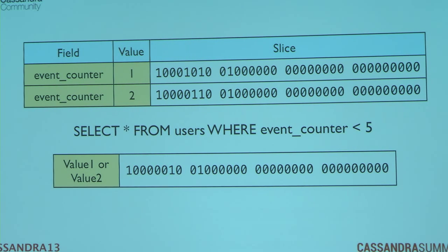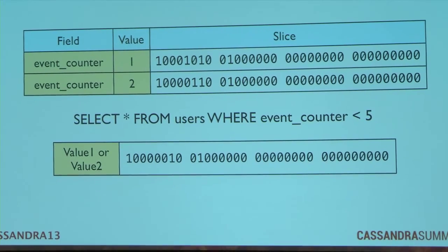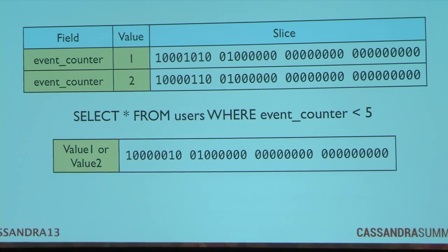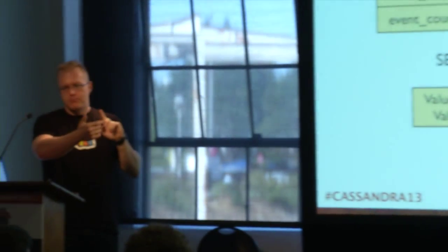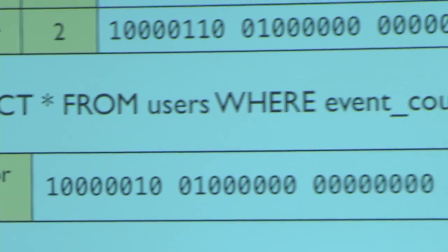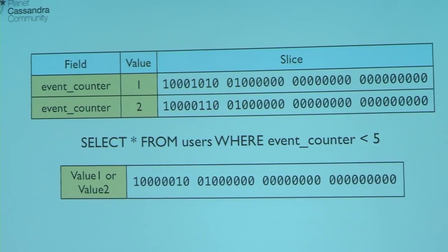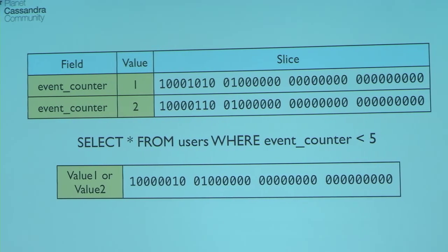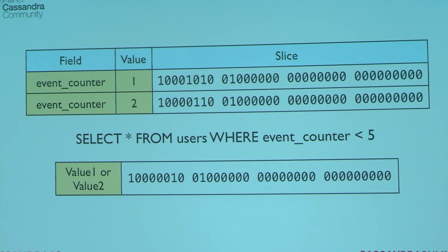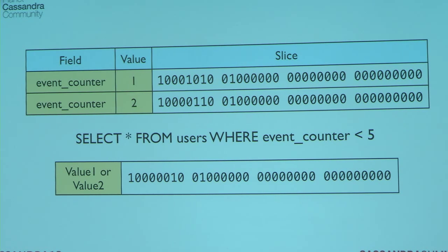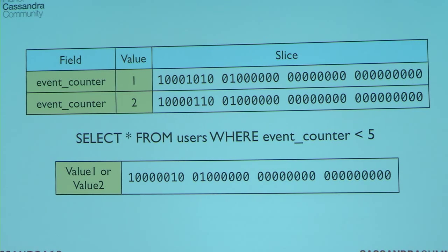How do I encode more interesting values into a bitmap index? You add more bitmaps. You create two-dimensional arrays — multiple bit slices all for the same field, and for each possible value, say I'm indexing counters, I'll do one array for value one and one array for value two. If you're present in the array for counter value one, your counter value is one; if in the array for counter value two, your counter value is two. That way I can do range queries: give me all users that triggered this event fewer than five times — I take the first five bitmap indexes, do a union across them, and get all users that triggered the event zero through five times.